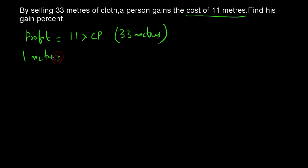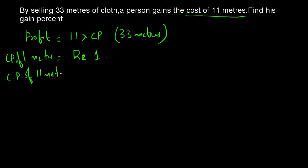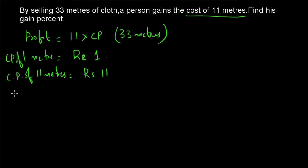11 CP is the profit when selling 33 meters. So for 1 meter, let the cost price equal ₹1. Then the cost price of 11 meters will be equal to ₹11. Why are we finding the cost price of 11 meters? Because that is the profit — profit equals 11 times cost price, so cost price of 11 meters equals ₹11. That is our profit.